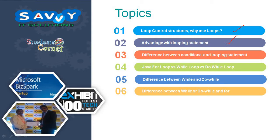We will cover the difference between conditional and loop control structures. This is for C language — not Java — covering the C for loop, while loop, and do-while loop, the difference between while and do-while, and the difference between while or do-while and for. These are all discussed in this video.